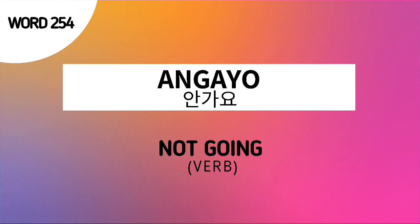The meaning of the word Angkayo is 'not going.' This is actually the combination of An and Kayo. Angkayo is the present tense form of the verb Kada. The verb Kada means 'to go,' and its present tense form is Kayo, which means 'go.' So when we say Angkayo, it's just the negation of Kayo. Therefore, Angkayo means 'to not go' or 'not going.'